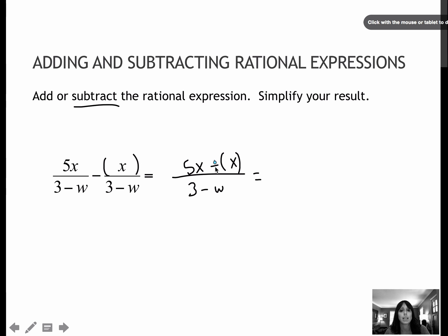And then, of course, I would keep flip change, and that would give me 5x plus negative 1x, and if I combine those together, that gives me 4x. Nothing on the denominator will change.